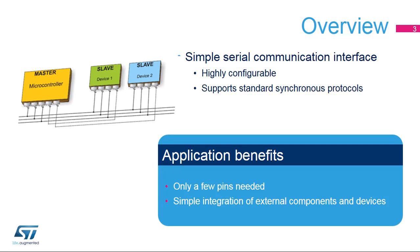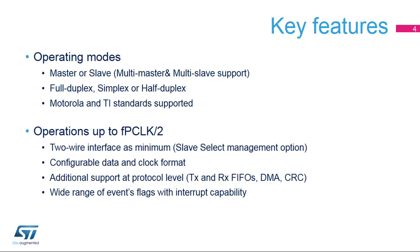Thanks to the highly configurable capabilities of the peripheral, many devices can be simply accommodated in the existing project. The STM32 SPI offers various operating modes, which will be explained in more detail in this presentation. The communication speed cannot exceed half of the internal bus frequency, and a minimum of two wires is required to provide the serial data flow synchronized by a clock signal in a single direction at one time. An optional hardware slave select control signal can be added. The data size and transmit shift order are configurable, as well as the clock signals, polarity, and phase.